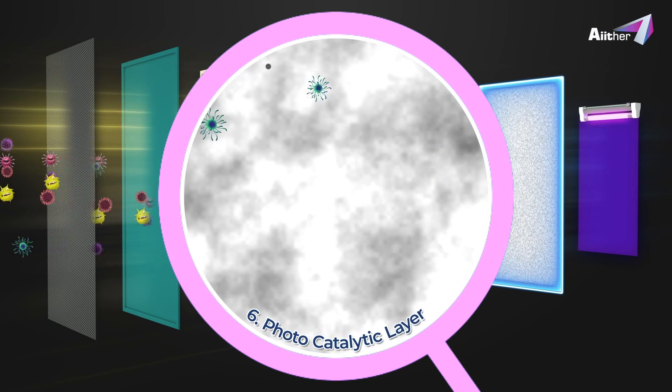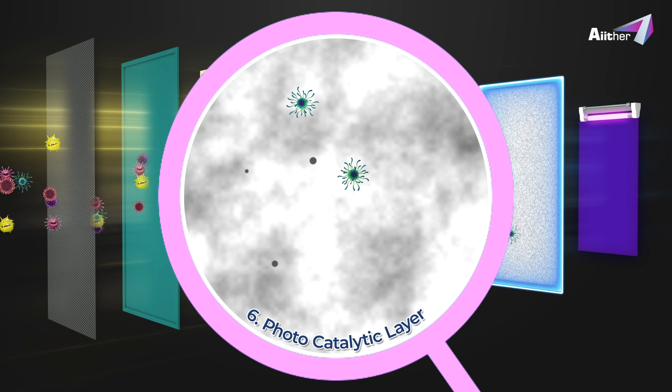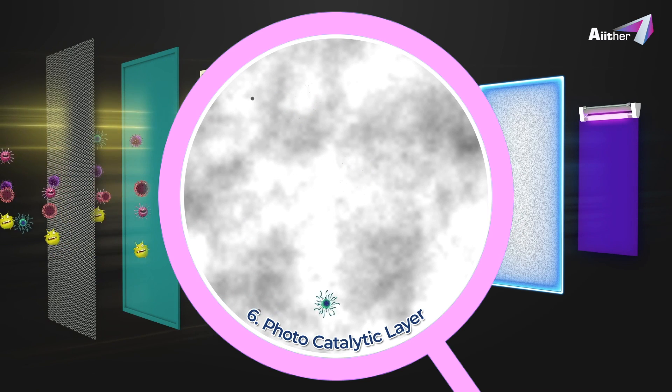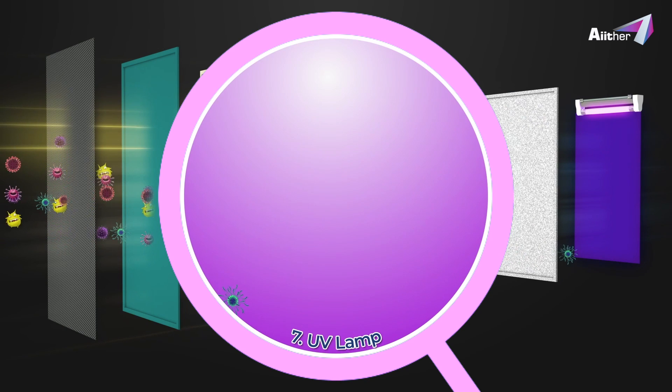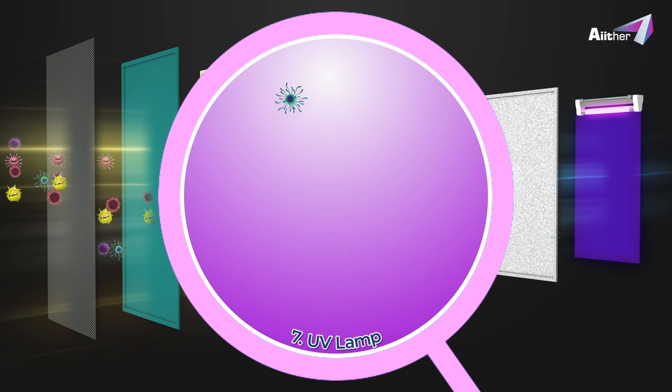The sixth photocatalytic layer decomposes remaining organic pollutants like formaldehyde and microbes. The seventh ultraviolet lamp sterilizes and neutralizes remnant microbes in the vicinity.